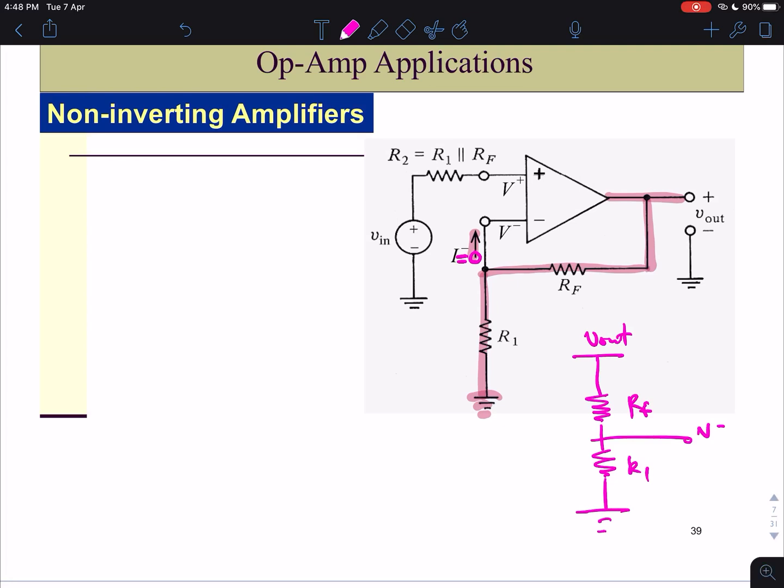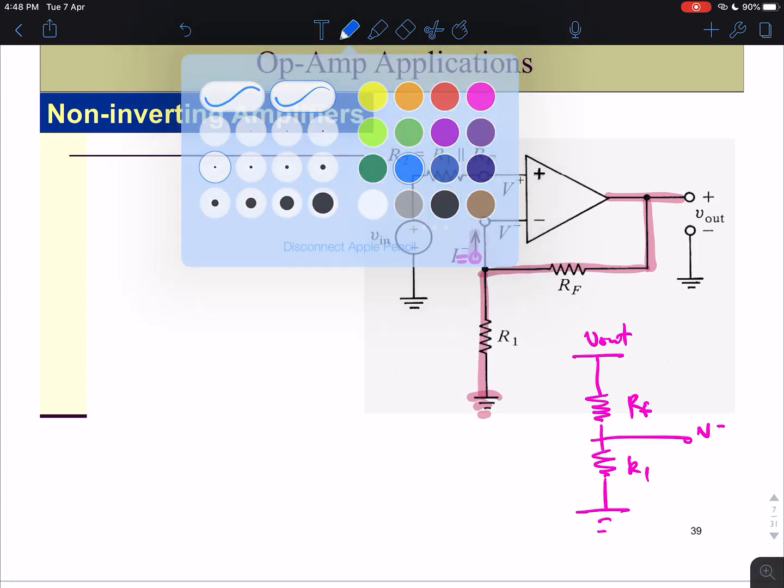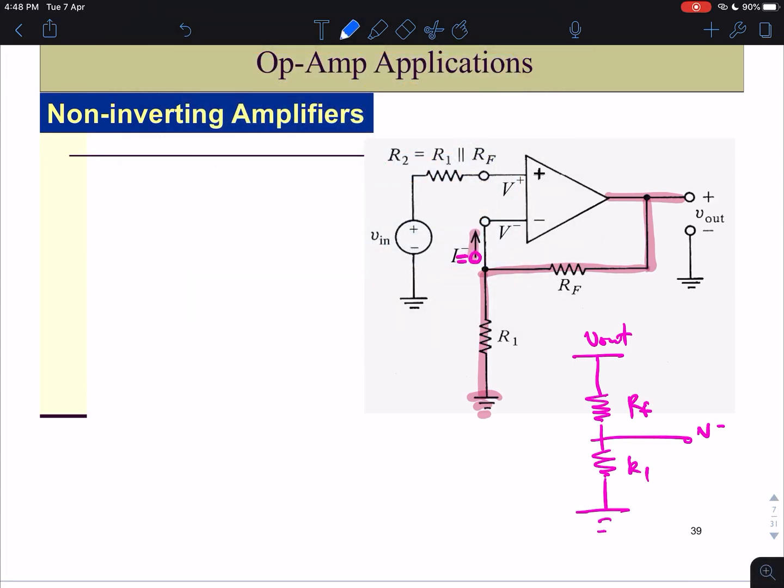What is the value of V minus? We can find V minus via voltage divider. So we have V minus equals to R1 over R1 plus RF and the input is V out.